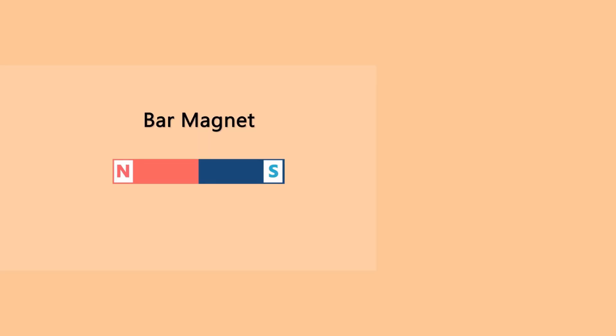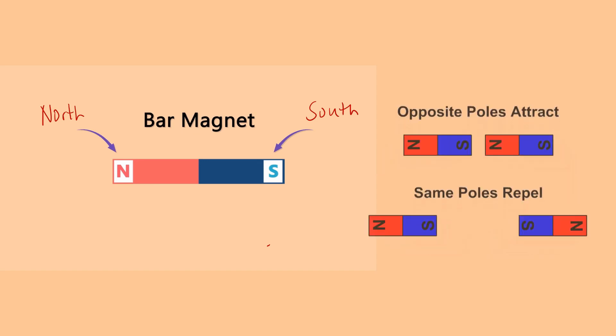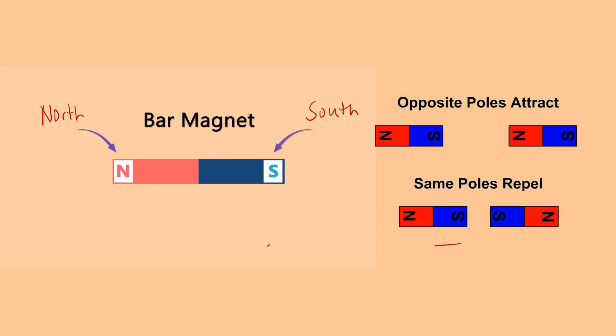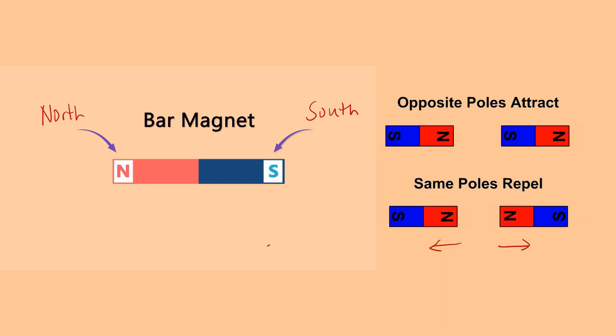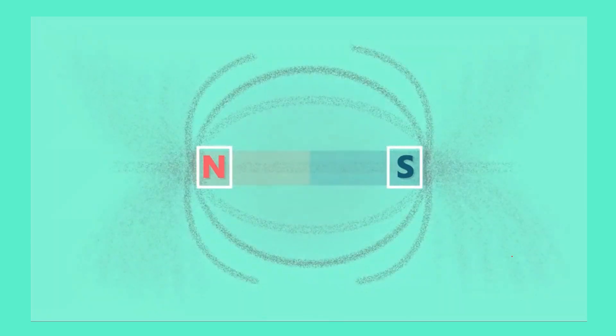This is a bar magnet. It has two ends on the opposite sides where N is the north pole and S is the south pole. When two bar magnets are put next to each other, the same poles will experience repulsive force while the opposite poles will attract one another. To know the direction and the pattern of the magnetic field around the bar magnet, we sprinkle some iron powder around it. We will find that the iron powder will arrange themselves in this pattern.